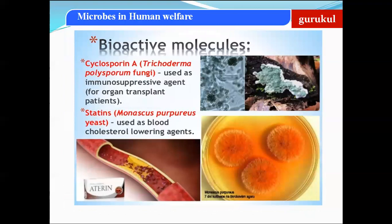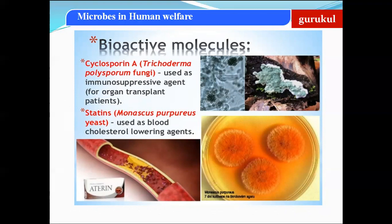Coming to an important topic — bioactive molecules obtained from microbes. One is Cyclosporin A, a bioactive molecule obtained from the fungus Trichoderma polysporum. Cyclosporin A is used as an immunosuppressant during organ transplantation, such as kidney or cornea transplants, suppressing the immune system of the recipient so the transplanted organ is accepted by the body.